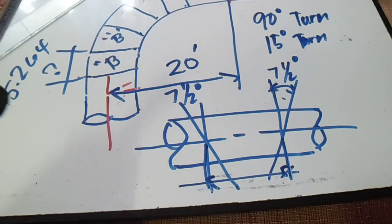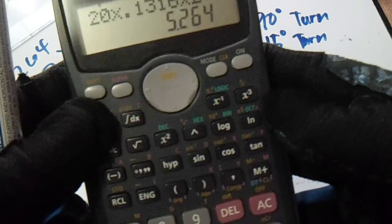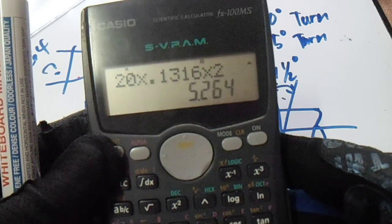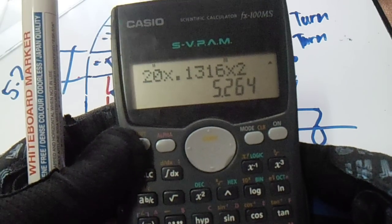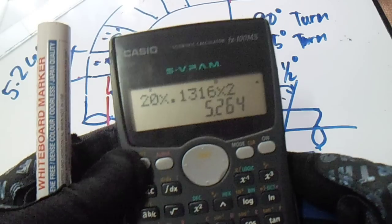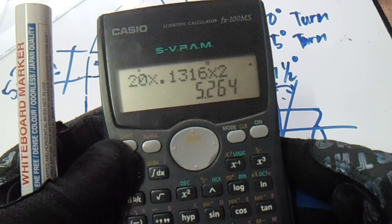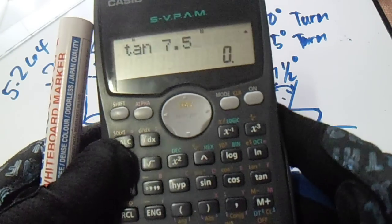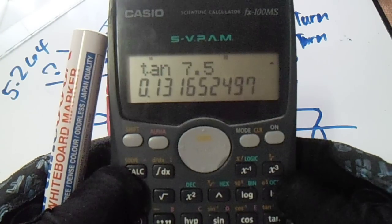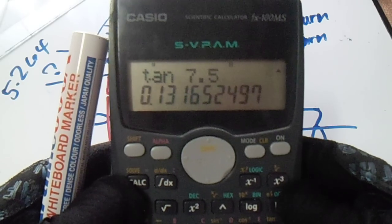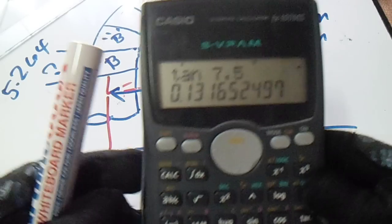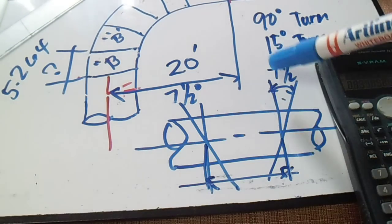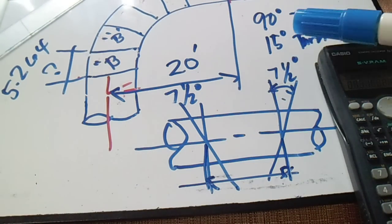You might ask, where did we get this 0.1316? The 0.1316 is the tangent of 7.5 degrees. This is the tangent of 7.5.